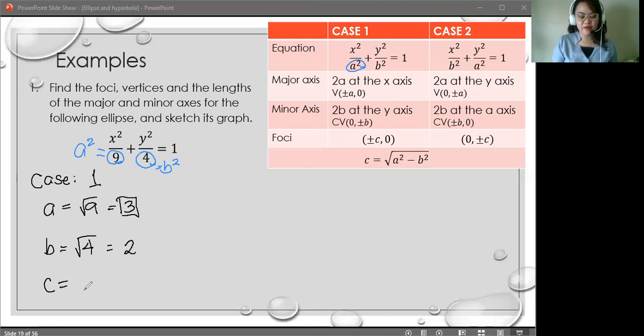Next, in identifying the value for c, we have to follow the formula that is given here. We have c is equal to the square root of a squared minus b squared. c equals the square root of a squared, which is 9, and b squared, which is 4. So we simplify that square root of 9 minus 4. You'll have the square root of 5. Does 5 have a perfect square? Could we still simplify 5? No, not anymore. So we will now use this as the value of c. Now we have a, b, and c. We are ready to find the other parts.